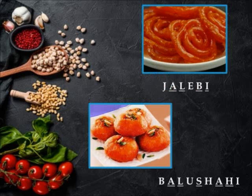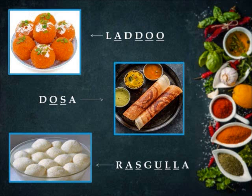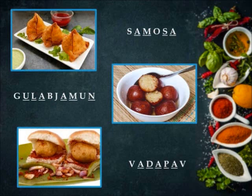Chapter 33: Indian Food. First is Jalebi. Second is Balu Shahi. Third is Laddu. Fourth is Dosa. Fifth is Rasgulla. Next is Samosa. Next is Gulab Jamun. And the last is Vada Pao.